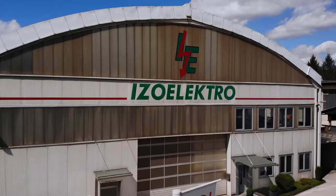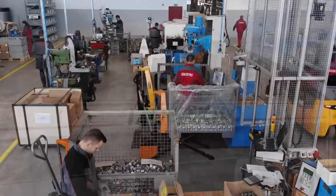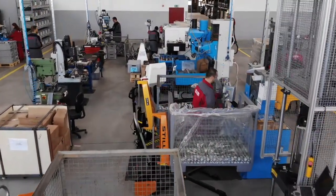At IsoElectro, we produce equipment for overhead power lines with a voltage of up to 52 kilovolts.